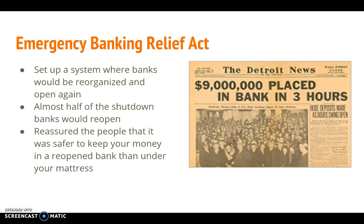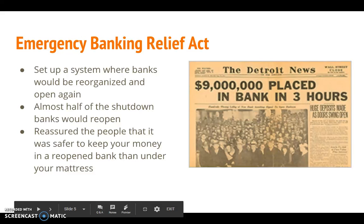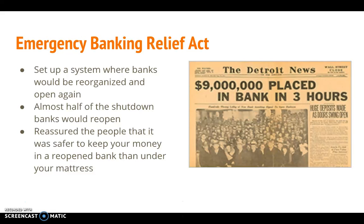The Emergency Banking Relief Act proposed a wide range of presidential powers over banking and set up a system by which banks would open again or be reorganized. By mid-March, almost half of the nation's banks had reopened. Roosevelt reassured the public that it was safer to keep money in a reopened bank than under a mattress. The next day, people deposited far more than they were withdrawing, which ended the banking crisis.